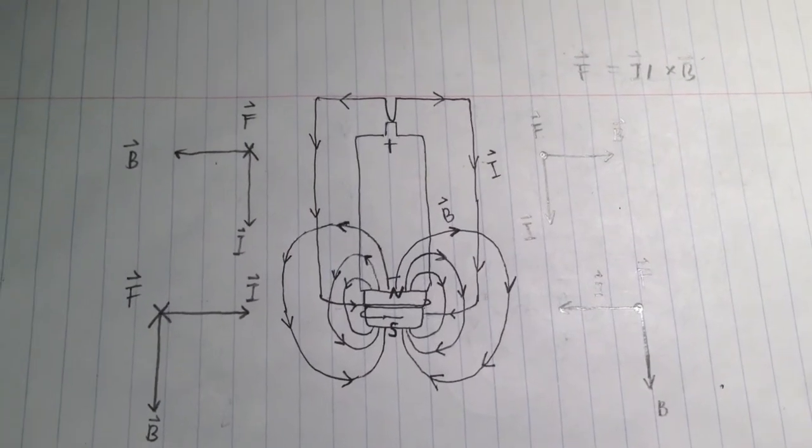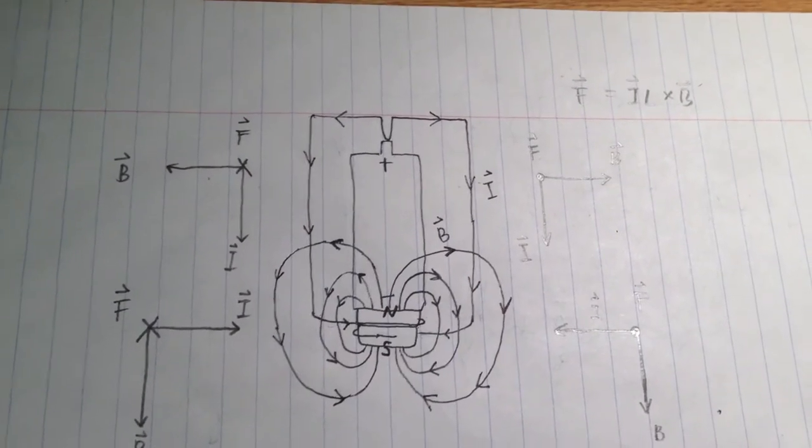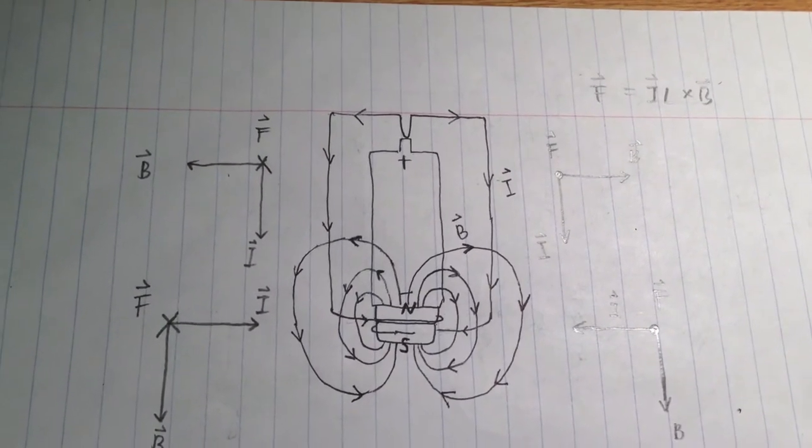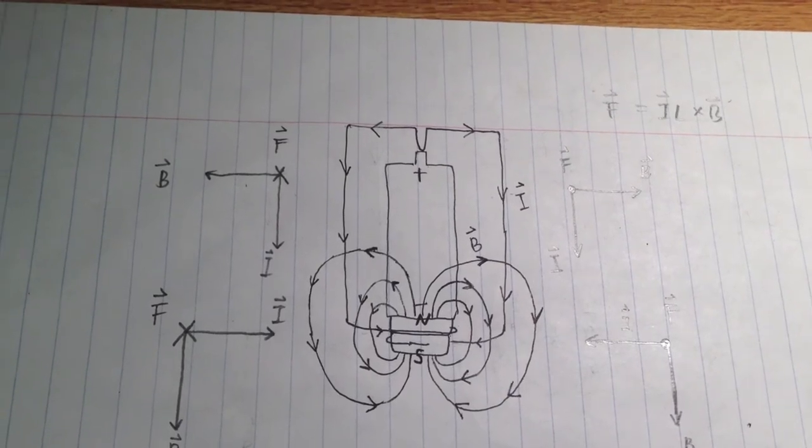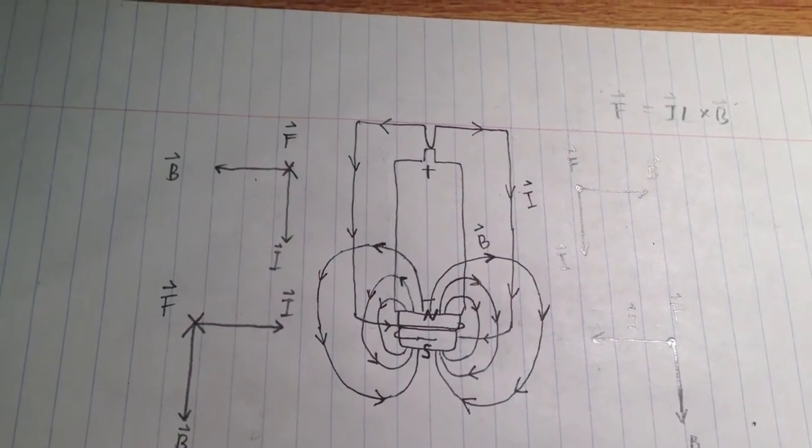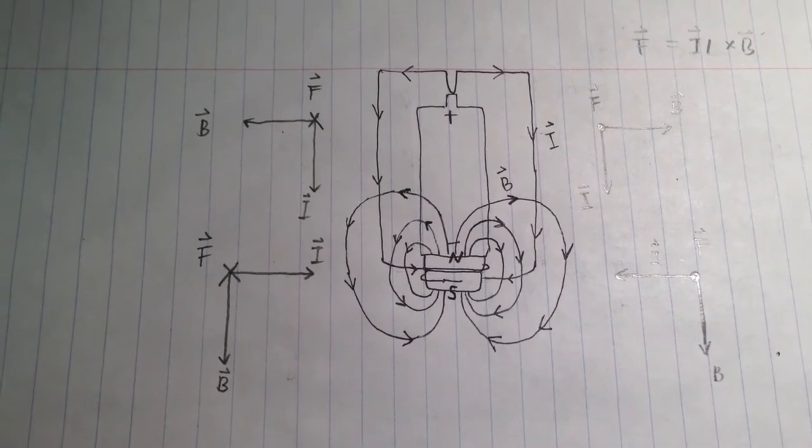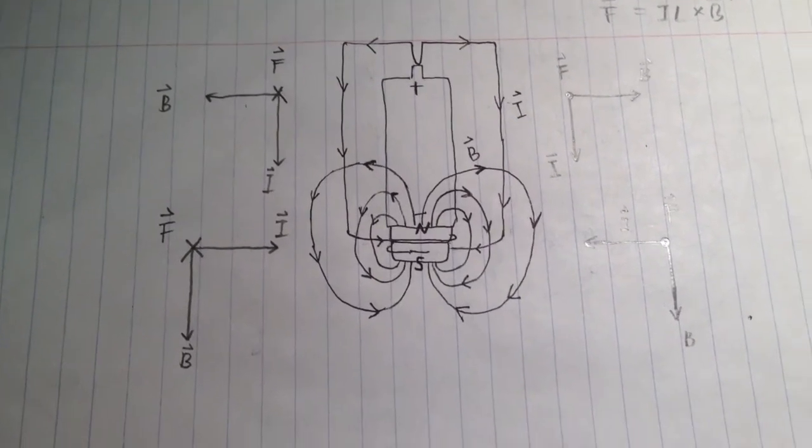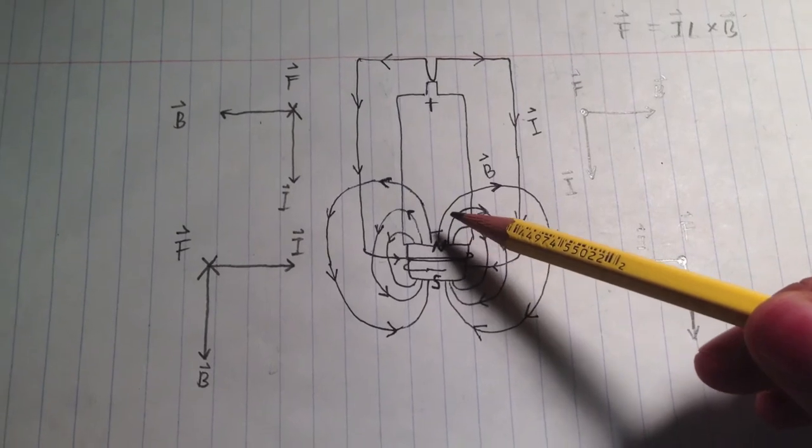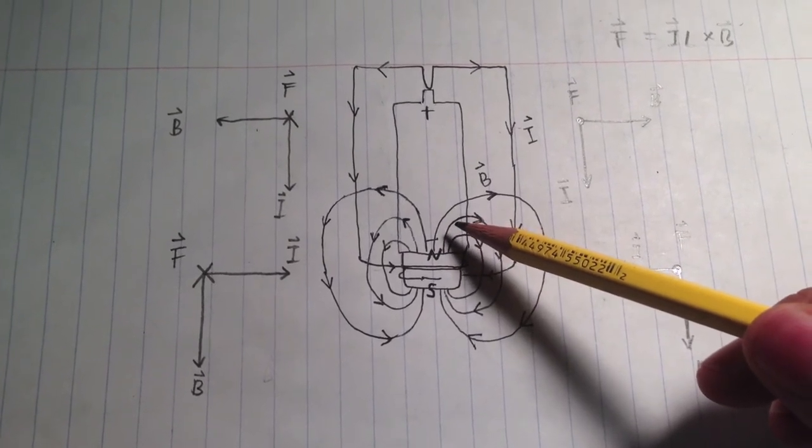This is my basic setup for my homopolar generator. It includes a battery with magnets underneath and a wire connecting positive and negative terminals. The current flows from positive terminal to negative terminal, and here are the magnetic fields from north pole to south pole.